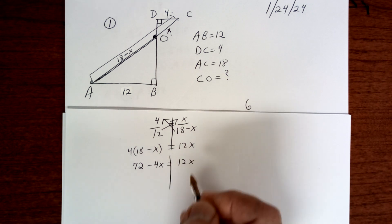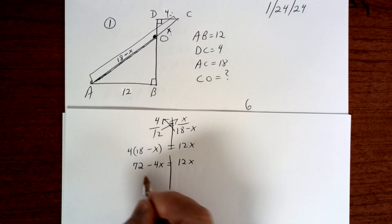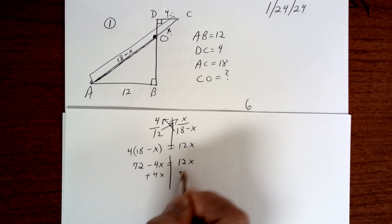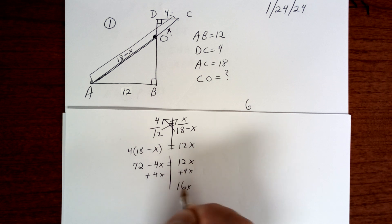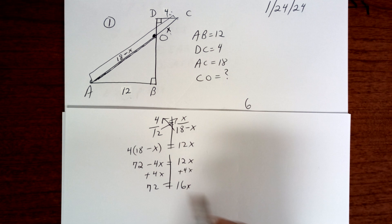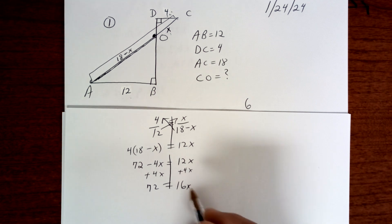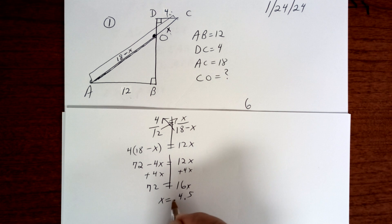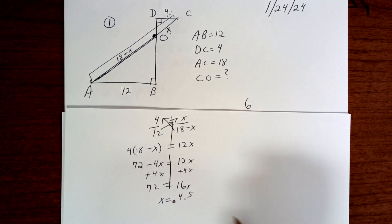Now what you want to do is add 4X to both sides, and you're going to get 16X is equal to 72. Then you're going to divide by 16, and you're going to get 4.5. The answer is 4.5.